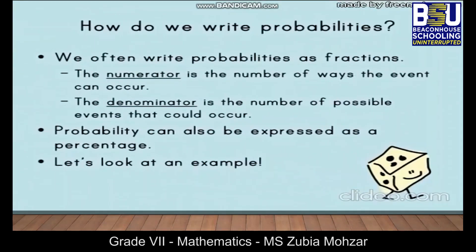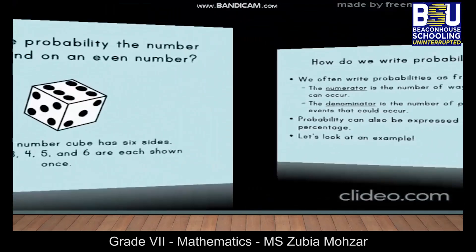How do we write probabilities? It's a very important question. We often write probabilities as fractions. The numerator is the number of ways the event can occur; the denominator is the number of possible events that could occur. Probability can also be expressed as a percentage. Let's look at an example.